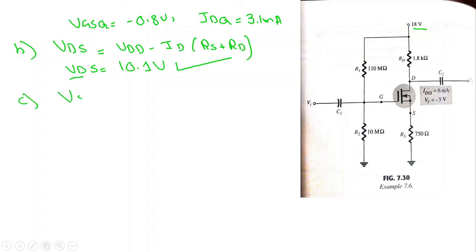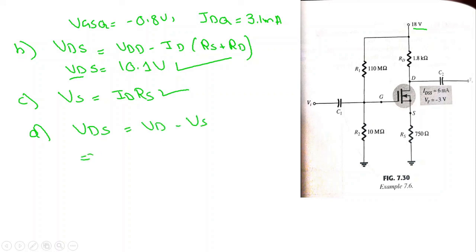To find VS, use VS = ID×RS and substitute the values. To find VD, use VDS = VD − VS, which gives VD = VDS + VS. Substitute VS into this equation to get VD. This is how we solve the voltage divider bias configuration of the N-channel depletion type MOSFET.